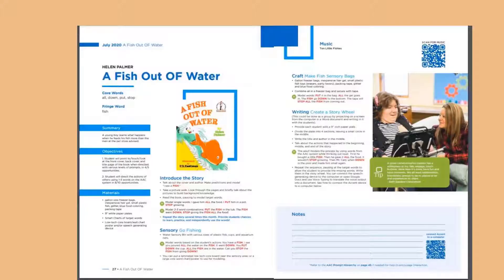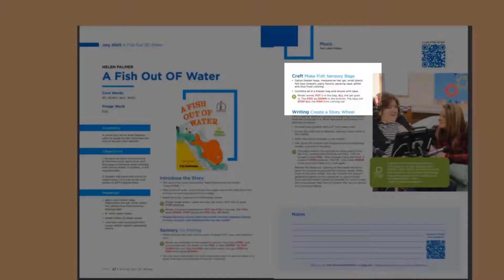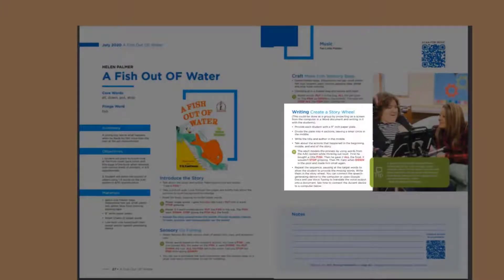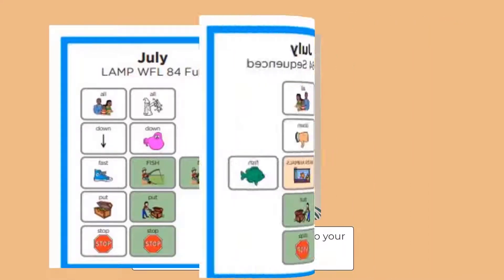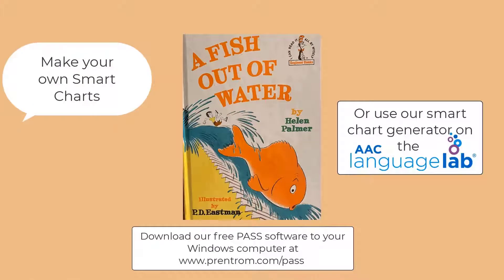You'll find additional activities for sensory, motor, craft, music, and writing. You'll also find smart charts for Lamp Words for Life 84 Full and Unity 84 Sequenced. You can use these when reading the story. If you need a different language configuration, you can make your own smart charts with our free PaaS software on your Windows computer.